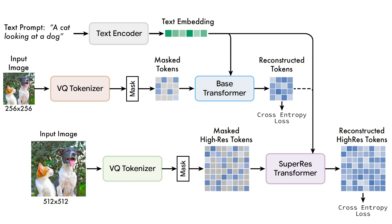Let's discuss the architecture of this model. The text encoder generates a text embedding used for cross-attention with image tokens for both base and super-res transformer layers. The base model uses a VQ tokenizer pre-trained on lower-resolution images and generates a 16×16 latent space of tokens.